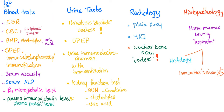For urine tests, urinalysis or dipstick is useless for diagnosing multiple myeloma — it's an easy test to rule out other things, but it won't diagnose myeloma. We use urine protein electrophoresis, urine immunoelectrophoresis with immunofixation, and kidney function tests such as BUN, creatinine, electrolytes, and uric acid in the urine.